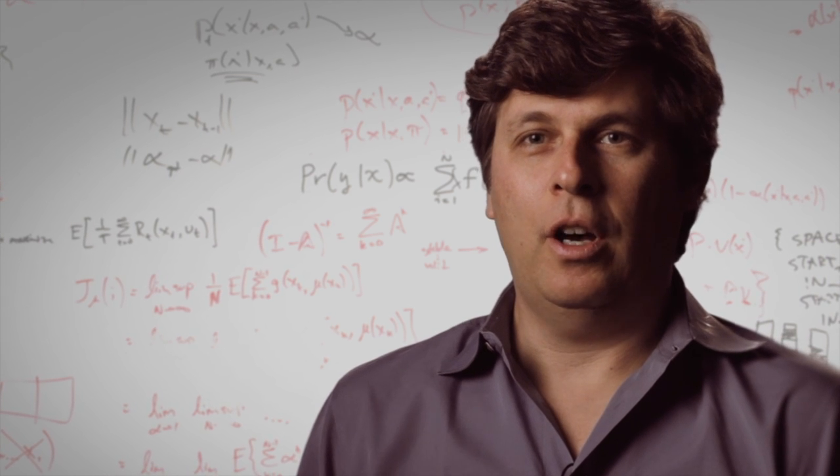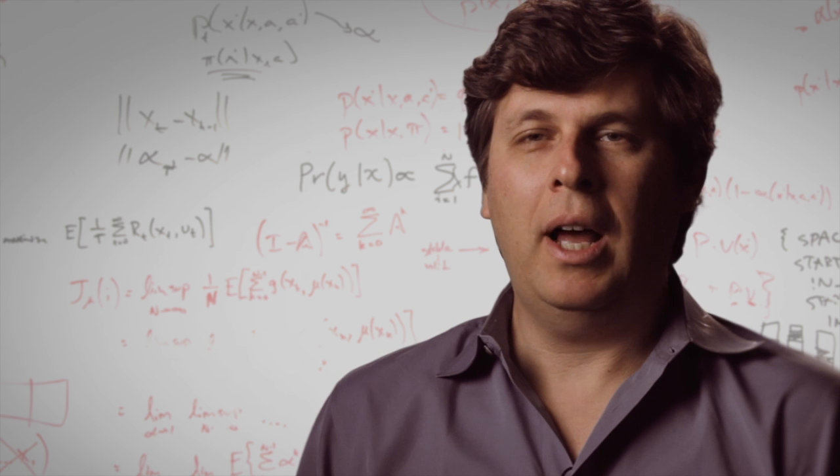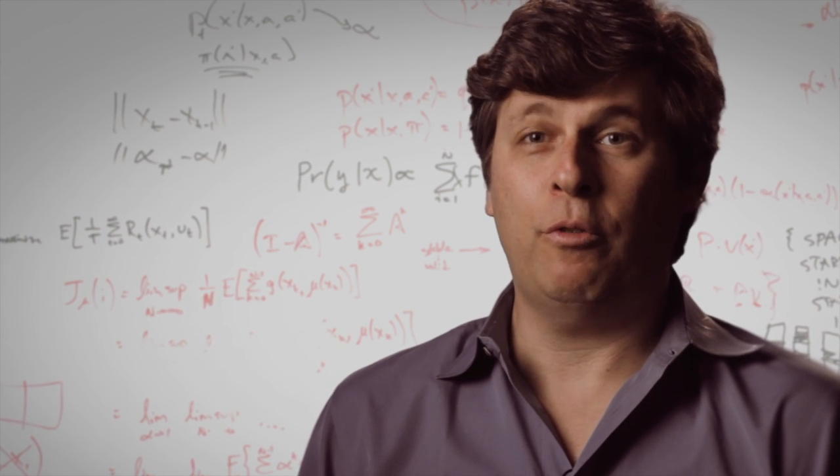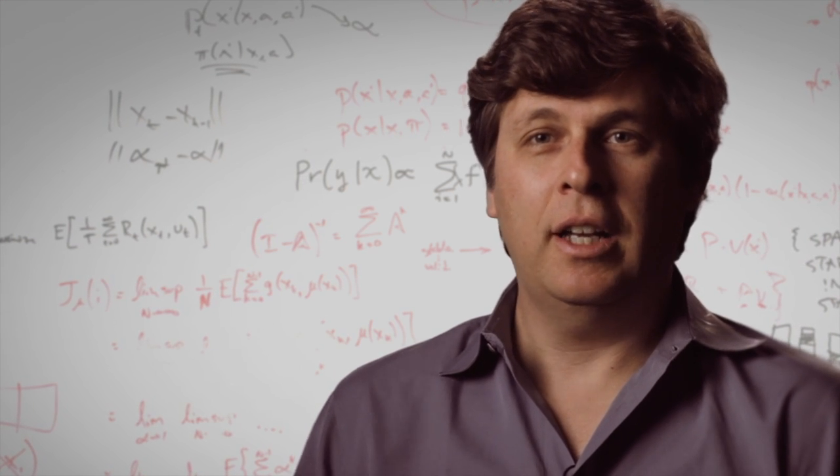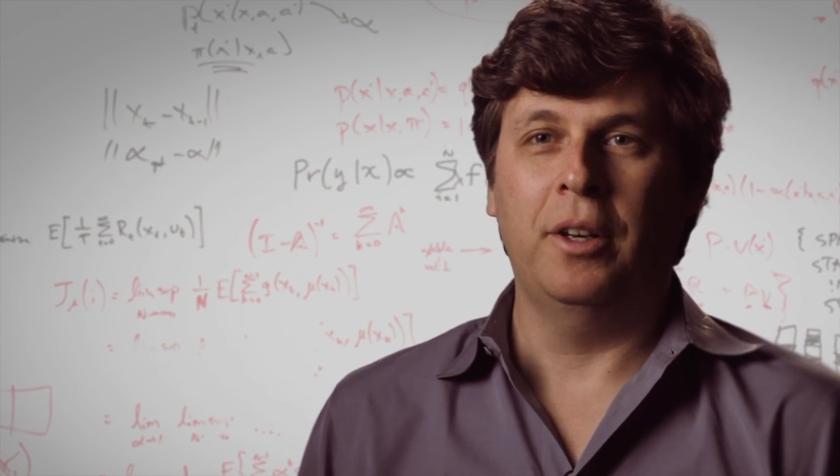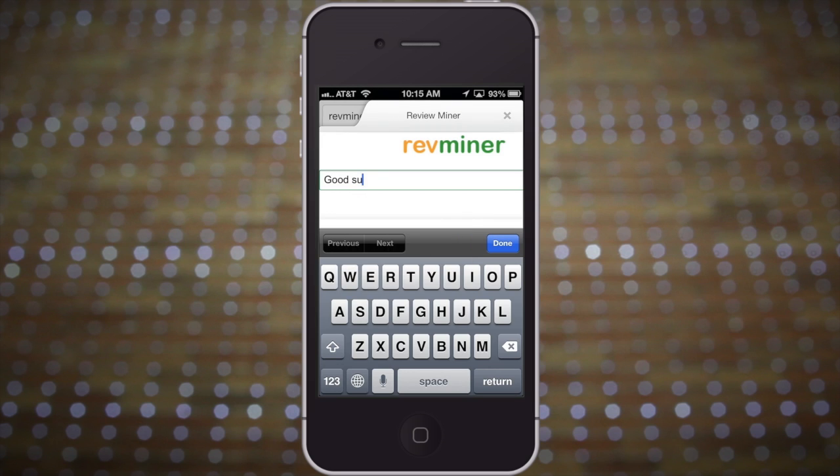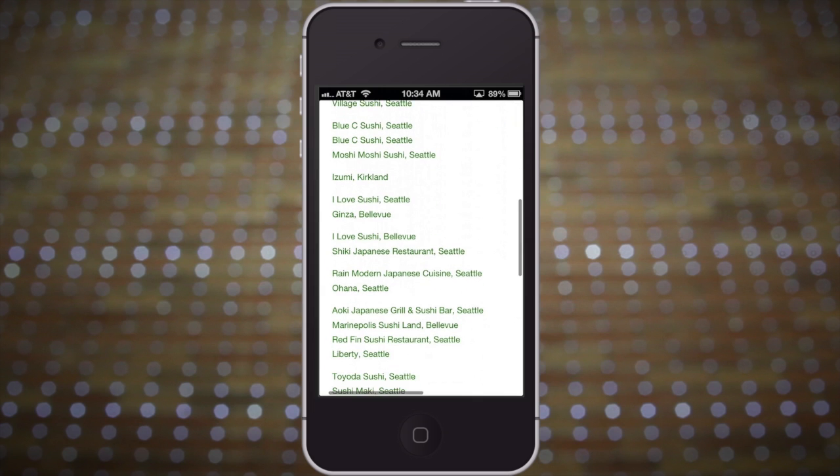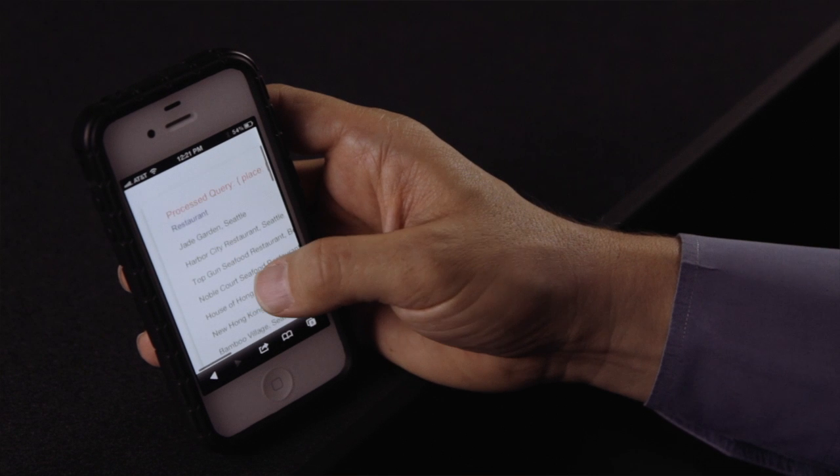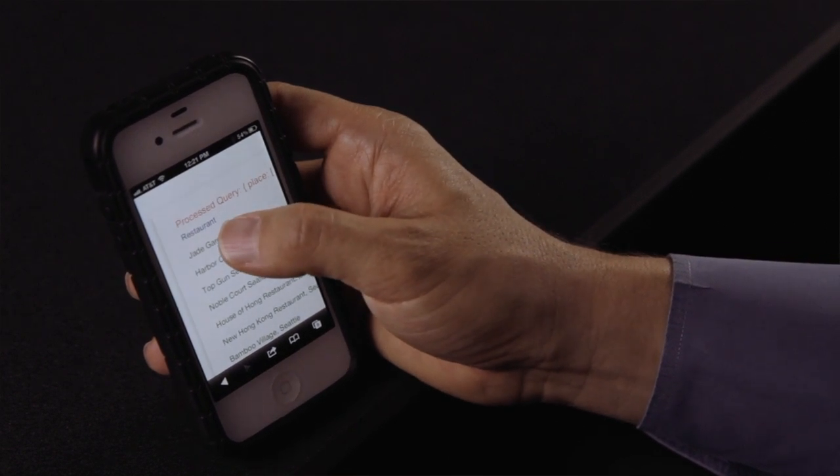To demonstrate the utility of OpenIE, we applied it to hundreds of thousands of restaurant reviews in Seattle in a project called Revminer. So for example, you could ask about good sushi in Seattle. You'll get the list of restaurants ordered by who's got the best sushi. Exquisite sushi is ordered ahead of good sushi, and good sushi is below great sushi.